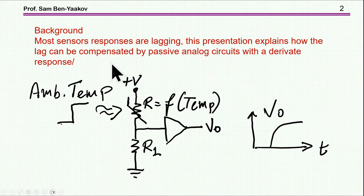So let me say a few words about the objective of this presentation. Most sensors have a lag response and this is true for a thermistor when it is used as a temperature sensor. In this presentation I'm going to explain how this lag can be compensated, at least partially, by a passive analog circuit with a derivative response.